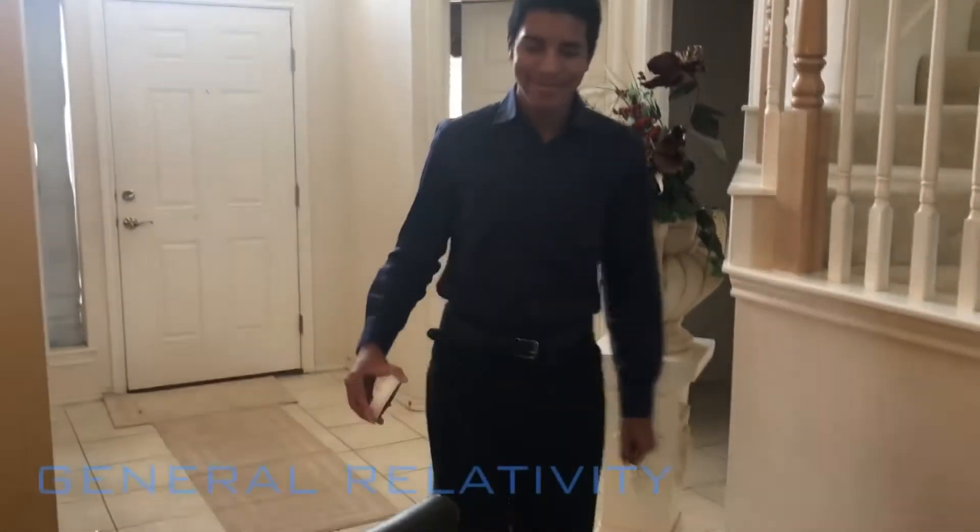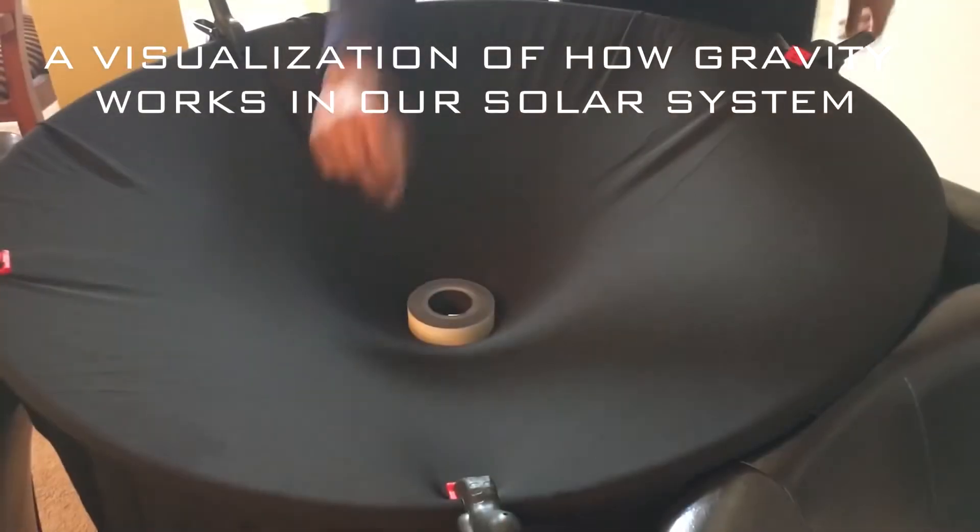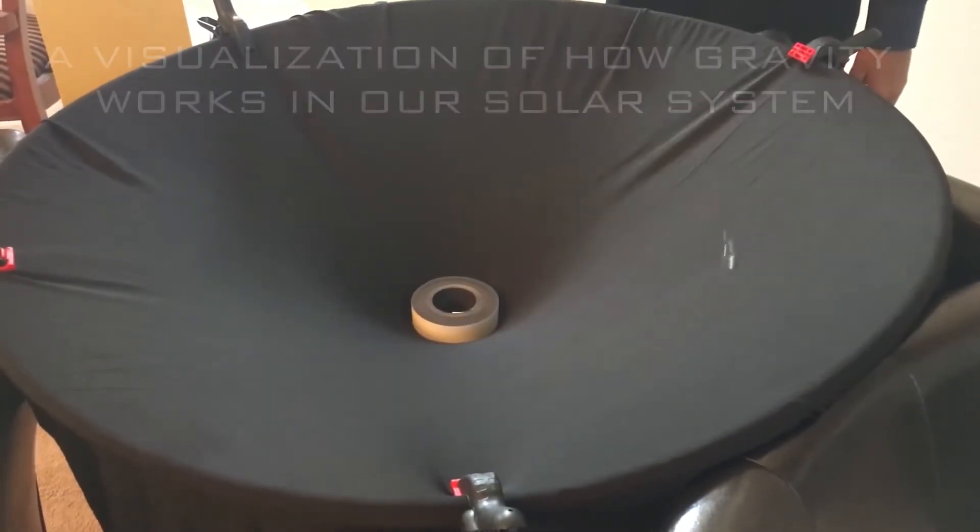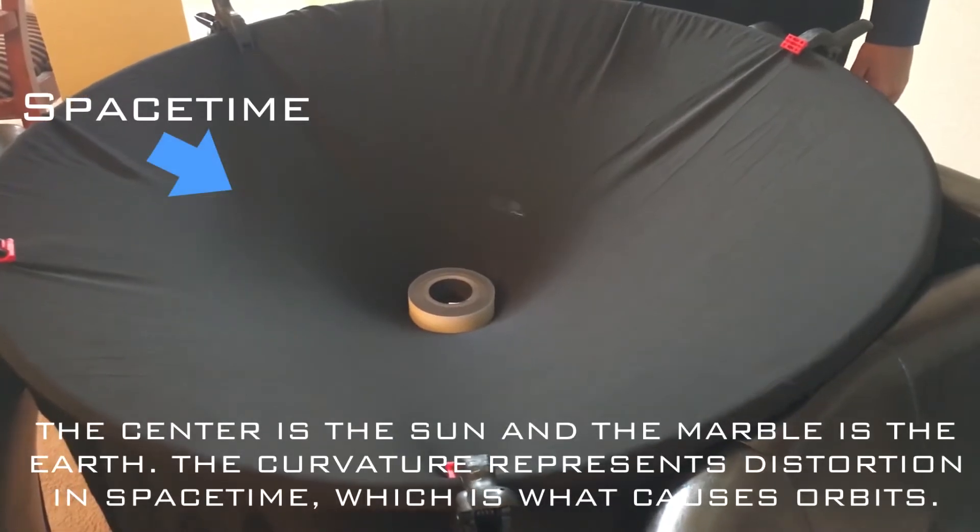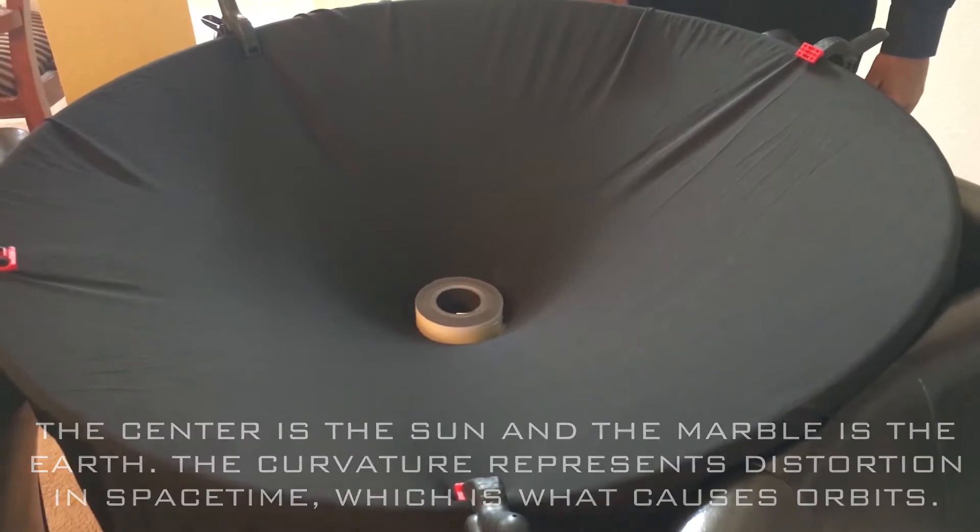General relativity, the most accepted theory of gravity, unifies space and time by interweaving them into a single continuum known as spacetime, and states that the mass of an object causes spacetime to curve or become warped. This curvature is what creates the effect of gravity.